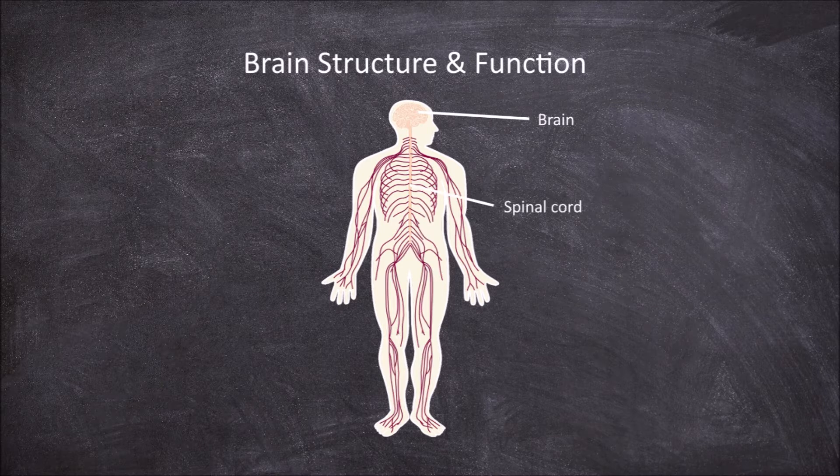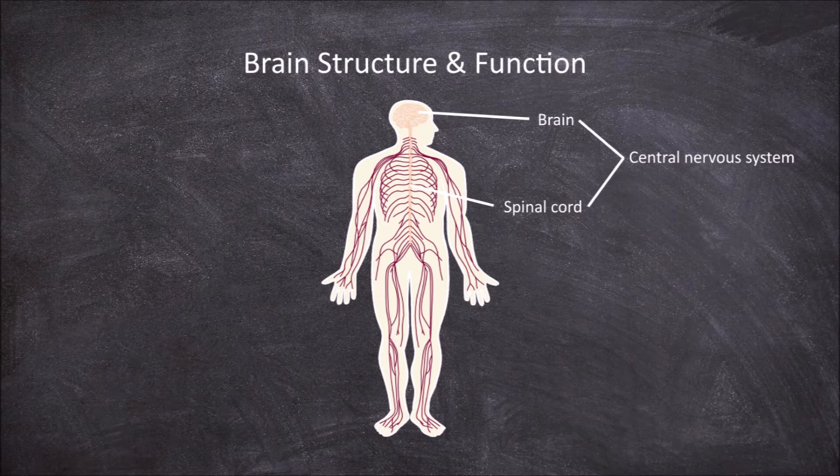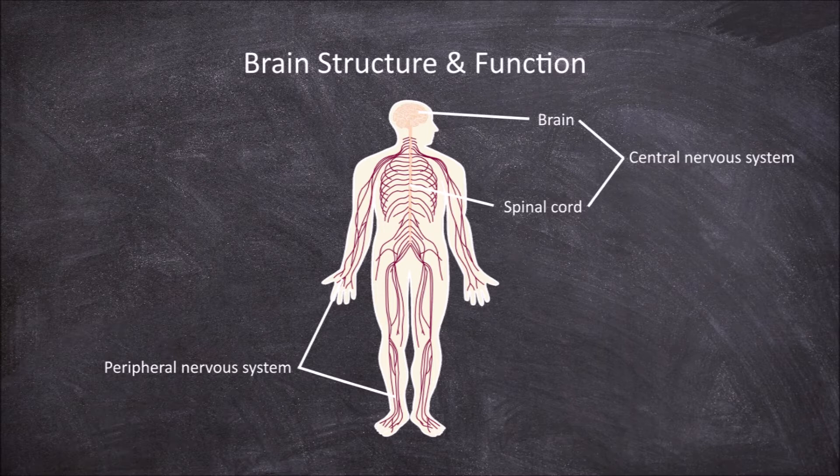Combined with the spinal cord, they make up the central nervous system. The central nervous system receives signals and information from the peripheral nervous system, where it is processed before an output is sent back out to the peripheral nervous system for a response to the stimulus.